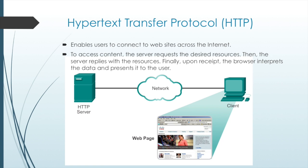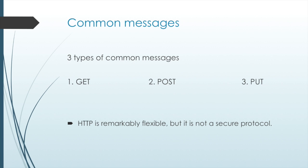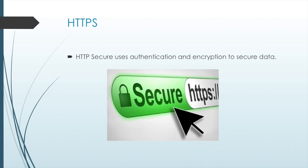To help the browser determine what type of file it is receiving, the server specifies what kind of data the file contains. The three common message types are GET, POST, and PUT. GET is a client request for data; POST and PUT are used to upload data files to the web server. Although HTTP is remarkably flexible, it is not a secure protocol. The HTTP Secure protocol is used for accessing or posting web server information. HTTPS can be used for authentication and encryption to secure data as it travels between client and server. HTTPS specifies additional rules for passing data between the application layer and the transport layer. The data stream is encrypted with Secure Socket Layer or SSL before being transported across the network. HTTPS creates additional load and processing time on the server due to encryption and decryption of traffic.